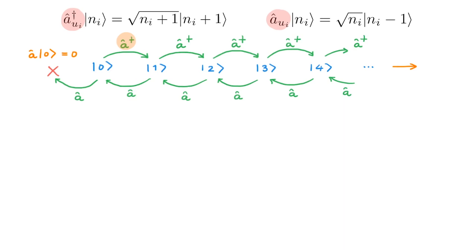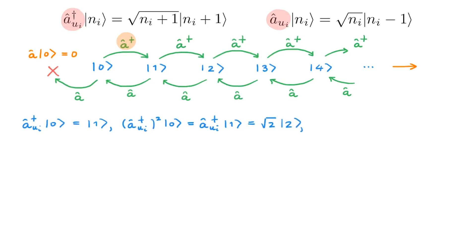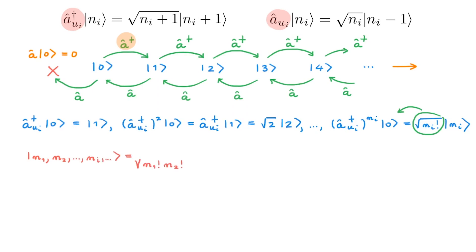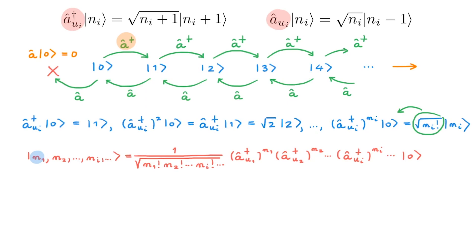This discussion also helps us construct arbitrary occupation number states starting from the vacuum state and acting on it with the creation operator. Acting with the creation operator n times on the vacuum, combining all the intermediate proportionality constants by applying the definition, and moving the proportionality constant to divide the other side, we get the occupation number state built from the vacuum. For an arbitrary occupation number state, we get a proportionality constant and then act an appropriate number of times with each creation operator on the vacuum state, obtaining occupation ni for each single particle state UI.